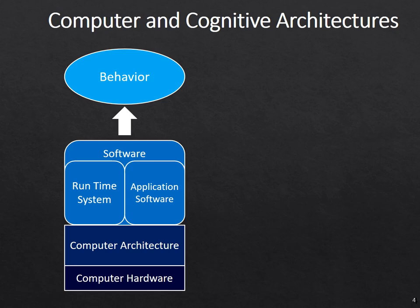One way to think about cognitive architecture is in comparison and contrast to computer architecture. On the left of the screen is a standard stack for computer architecture. At the lowest level is computer hardware, but then on top of that is computer architecture, which provides a level of constant processing that can be assumed by all the software running above it. So as the hardware changes, the cognitive architecture stays consistent.